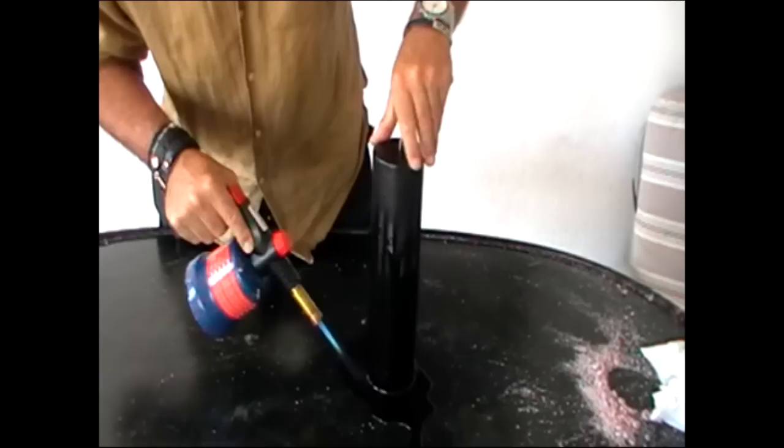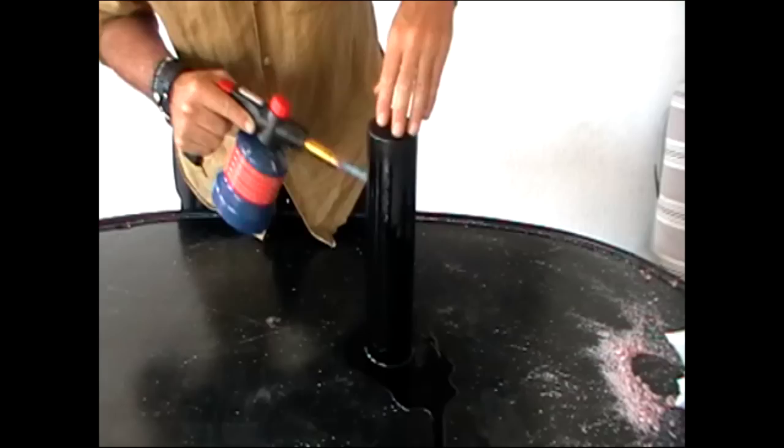The whole idea is to make sure that if there are any drips that you chase them all the way down with the blow torch so that you've got a smooth surface.